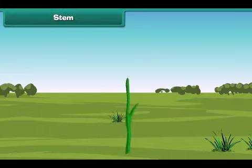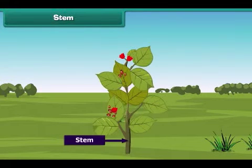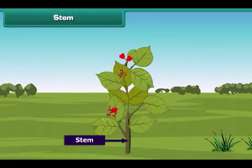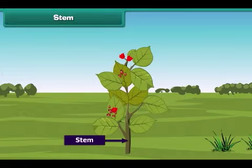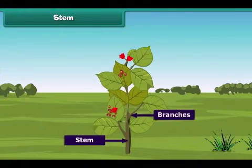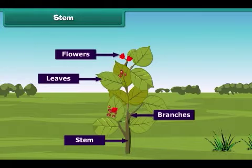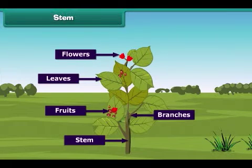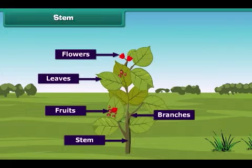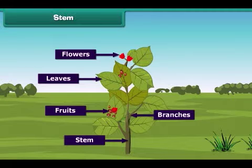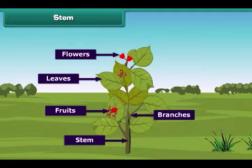Now let's know about stem. Stem is the green or brownish part of the plant which grows above the ground. It provides support to the plant and bears branches, leaves, flowers and fruits on its body. In young plants, the colour of the stem is usually green, but over a period of time and with advancing age, it turns brown in colour.